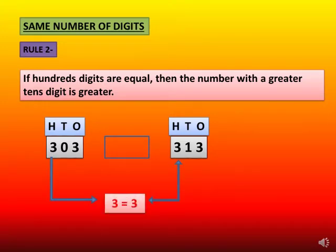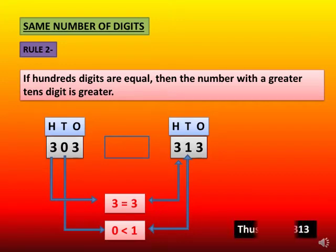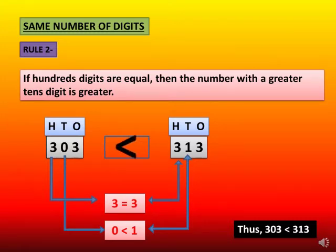So now compare the digit at tens place. In 303 the digit at tens place is 0, and in 313 the digit at tens place is 1. As 1 is greater than 0, the number 313 is greater than 303.